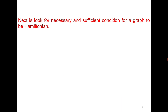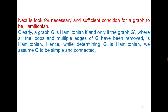Next is to look for a necessary and sufficient condition for a graph to be Hamiltonian. In the case of Eulerian graphs it was very easy — you just need to check that the degree of all vertices is even. But in the case of Hamiltonian graphs, it is not very straightforward. Note that since we have to visit all the vertices, loops and multiple edges can be neglected. To prove results related to Hamiltonian graphs, we always assume the graph to be simple and connected, and if the result holds for simple connected graphs, it holds once we introduce loops or multiple edges as well.